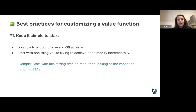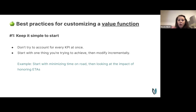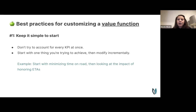For customizing the value function, my first piece of advice is to keep it simple to start. Don't throw every KPI into your value function at once. Start with one thing you're trying to achieve — typically minimizing route duration or distance — and then modify the value function incrementally, adding terms and running experiments to see what impact each has on your solution.